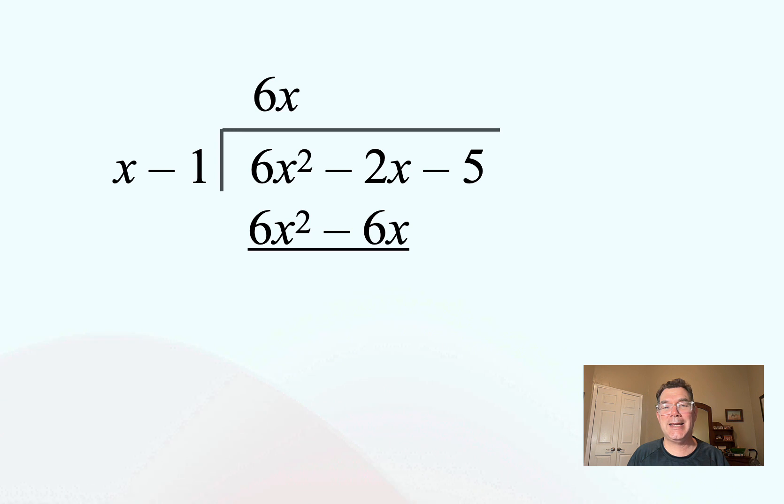I multiply the entire divisor x minus 1 by 6x and I get 6x squared minus 6x. Instead of subtracting that, just to avoid a mistake, I'm going to add the opposite. So when I do that, I'm going to get 4x and then I bring down the minus 5, which is the next term.